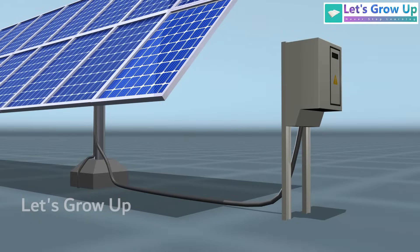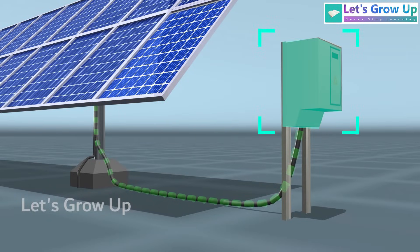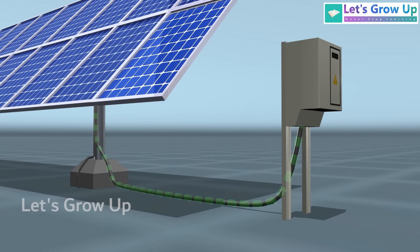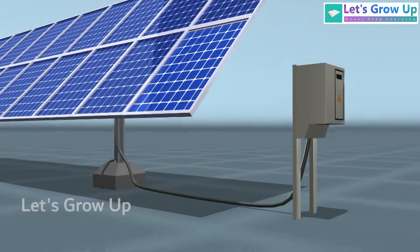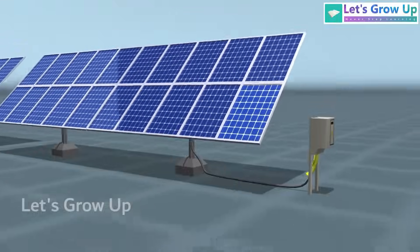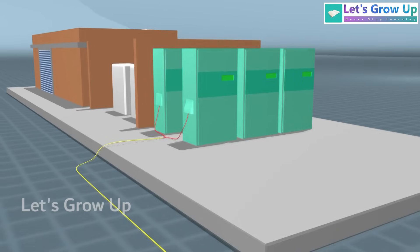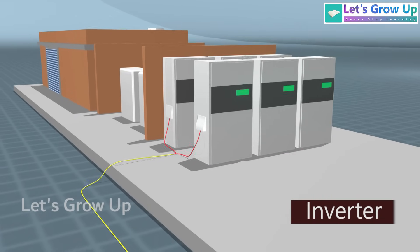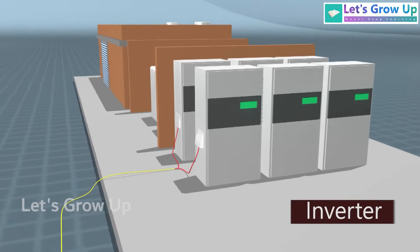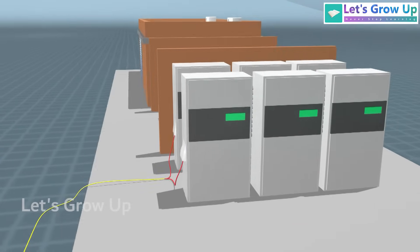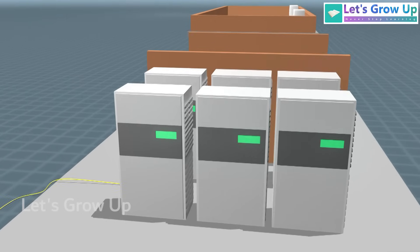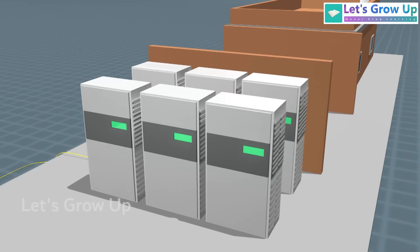The wiring from each string is then combined in a combiner box, which collects the DC electricity from all the strings and directs it toward the next stage of the system. The collected DC electricity is then fed into an inverter, which converts it into alternating current (AC) electricity. This conversion is necessary because most electrical appliances and the grid operate on AC power.